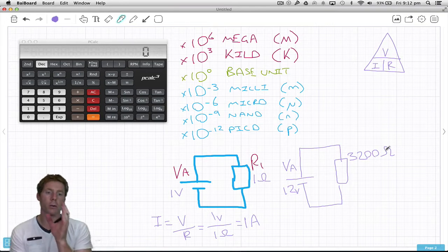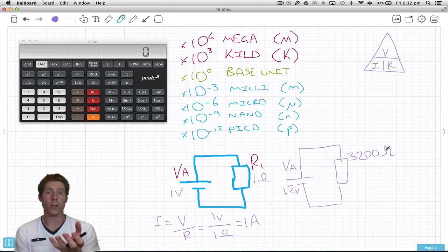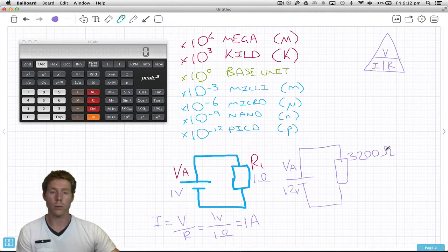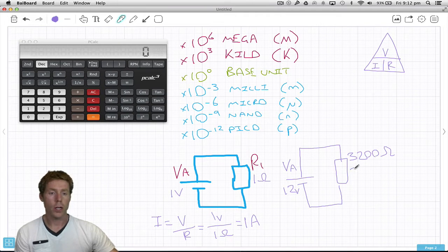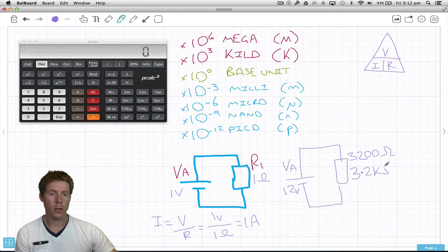Just a note: 3200 ohms can be written in a more simple way. We can actually write it as 3.2k ohms.